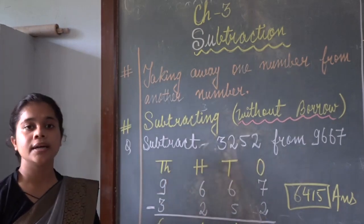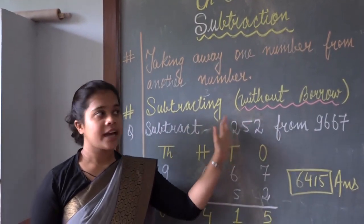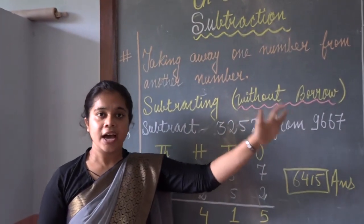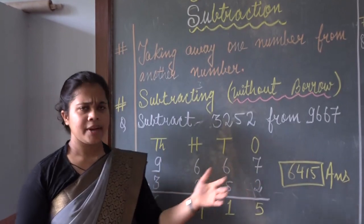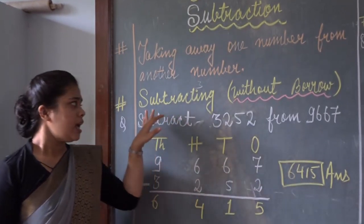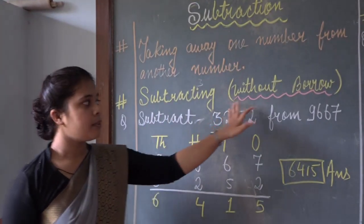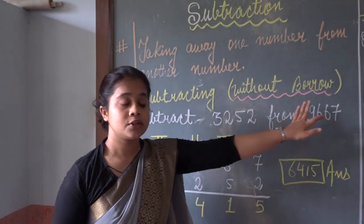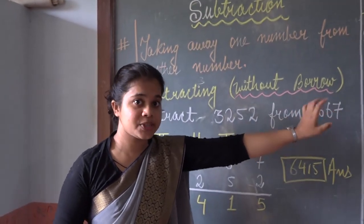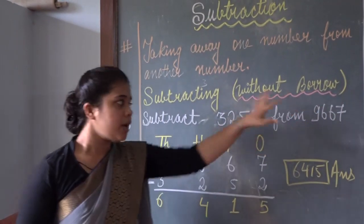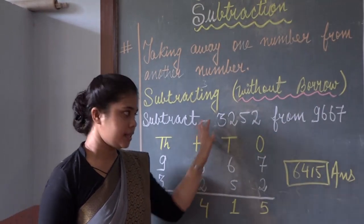Now we will learn about subtraction without borrow, with borrow, subtracting with 0, and many more. We will be looking at subtraction of 4-digit numbers without borrow — it is not carry, it is borrow. We are not going to borrow anything in the first example.